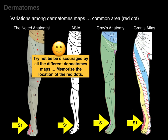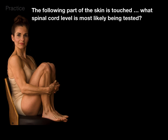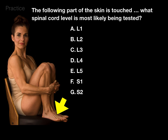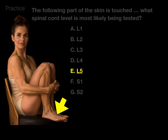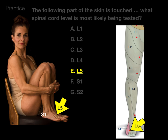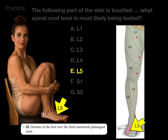Let's do a little practice. The following part of the skin is touched — what spinal cord level is most likely being tested? The area indicated is the skin where it touches your shoelaces, over the third metatarsal phalangeal joint on the dorsum of the foot. So that is going to be the L5 dermatome being tested.